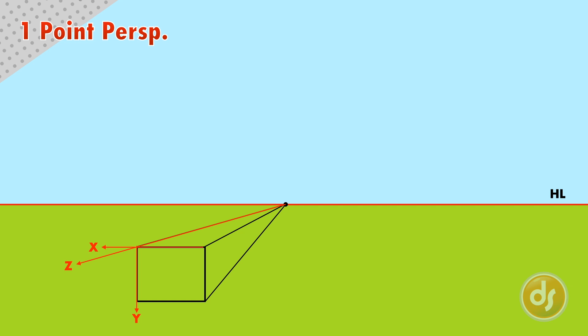Notice only one line system vanished to a point, which is why it is one point perspective. The X and Y lines will always be parallel or perpendicular to the horizon line in one point perspective.